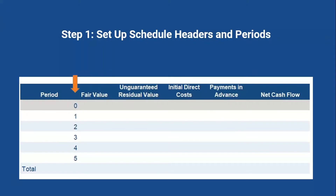Let's get started with the first step. To calculate the IRR function — the implicit rate — in Excel, first you need to set up the schedule headers and periods associated with the lease. We set this as a five-year lease with payments occurring at the beginning of each year, meaning there's a period zero with activity. At the end, period five has no lease payments, but it captures the unguaranteed residual value estimated at the end of the lease. So we've numbered our periods zero through five and added headers for all the components.